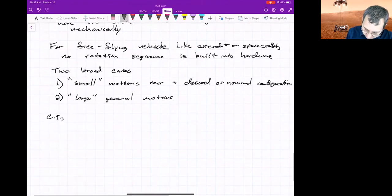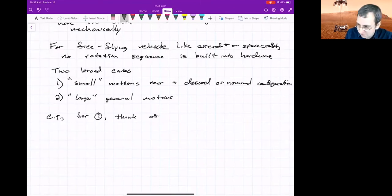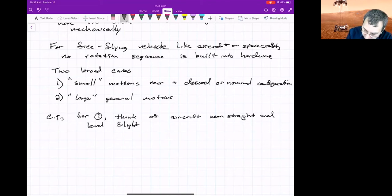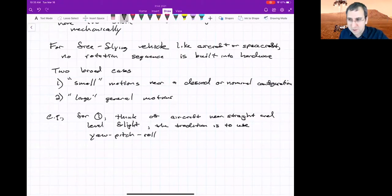So for example, for one, think of steady level flight. I know this isn't the aircraft class, but aircraft near straight and level flight. Straight and level flight means pitches anywhere near 90 degrees would be undesirable. Then it's just sort of tradition in some sense to use yaw, pitch and roll. It's just sort of a tradition of that field.